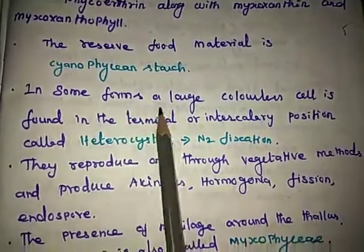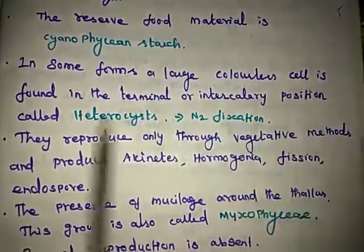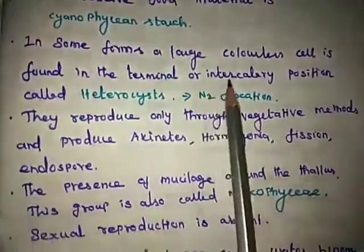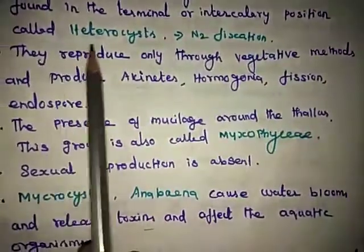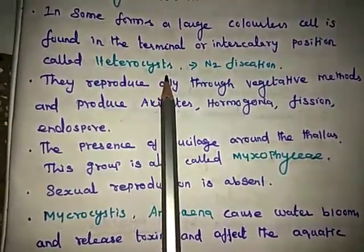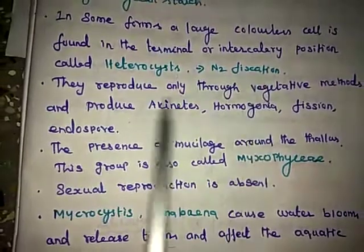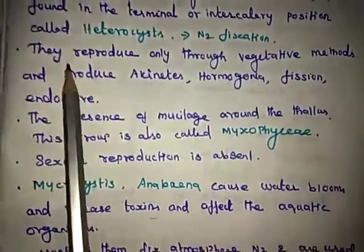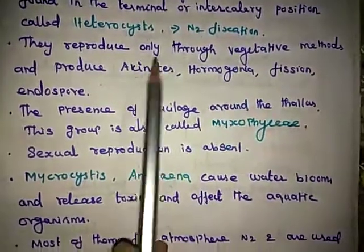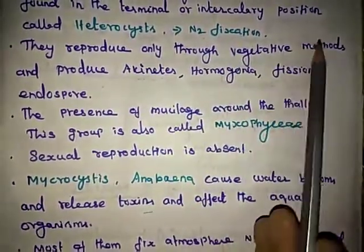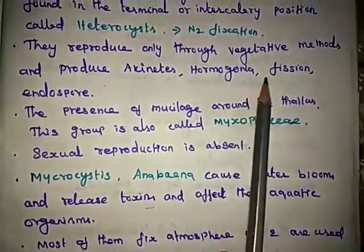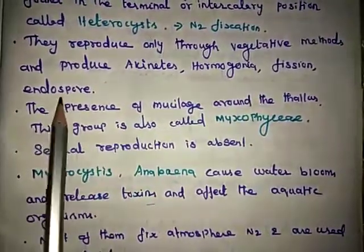In some forms, a large colorless cell is found at the terminal or intercalary position, called a heterocyst. Heterocysts are involved in nitrogen fixation. They reproduce only through vegetative methods, producing akinetes, hormogonia, fission, and endospores.